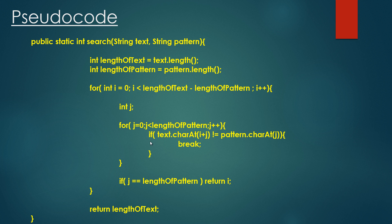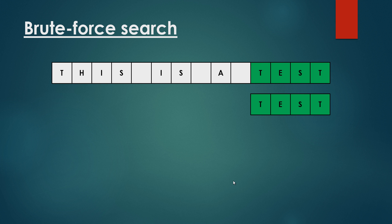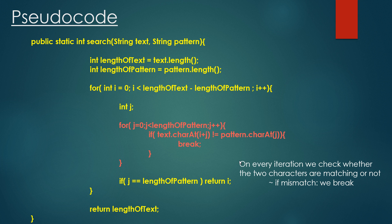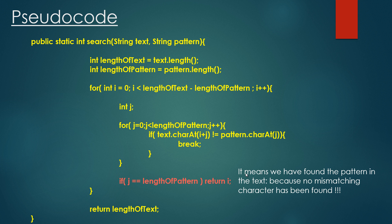We then make an inner for loop and iterate through the pattern. If characters are not matching we break out. If j equals the length of the pattern, we return i, because we have managed to consider every single character of the pattern — it is a match. We return i, which is the index of the first character of the matching pattern in the text. We iterate through the whole text character by character; on every iteration we check whether the two characters match. If there is a mismatch we break out. If no mismatch is found, we have found the pattern. If we exhaust the text without finding the pattern, we return the length of the text, meaning the pattern is not present.